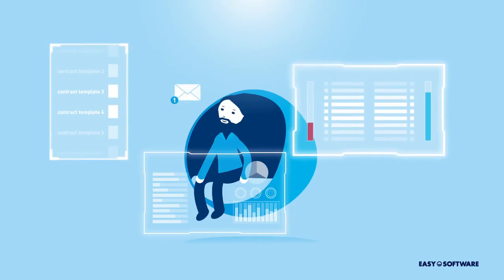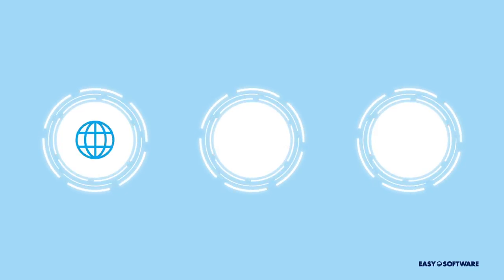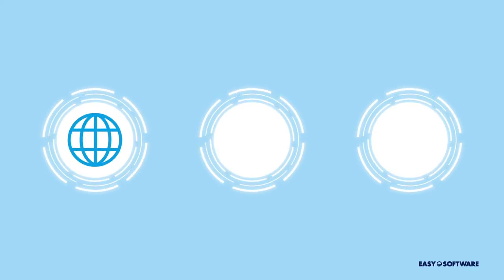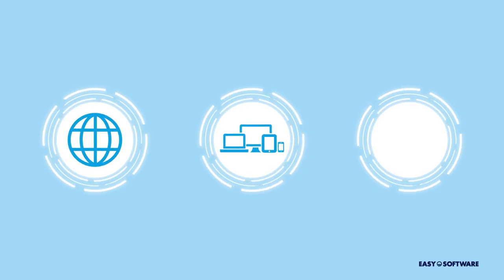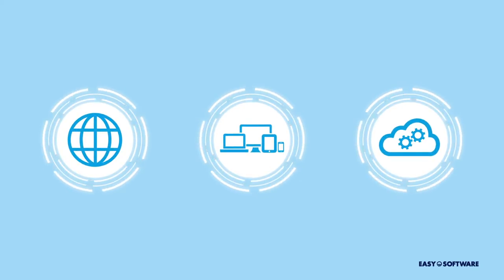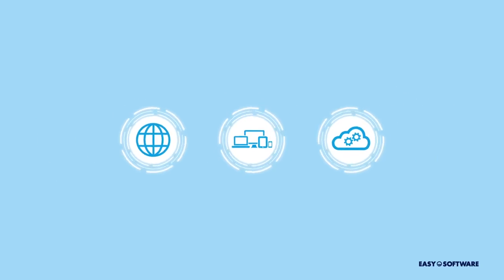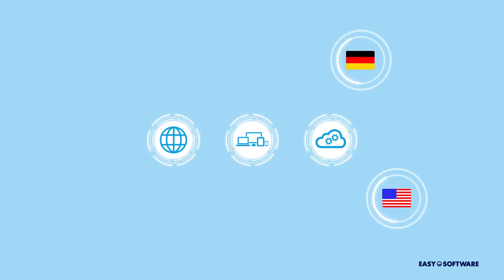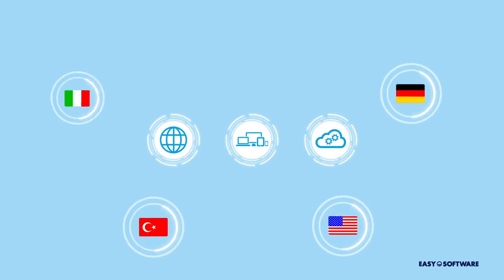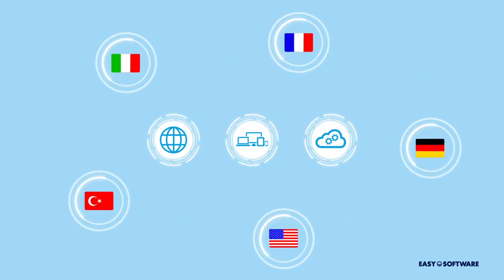The integrated version and template management feature ensures a consistently high quality and accuracy in drafting contract documents. You can keep an eye on everything, anytime — the browser is easy to use. Easy Contract is web-based, multi-platform capable, and has open interfaces to integrate with third-party systems. By default, it comes in an English and a German version, but you can quickly add other languages.